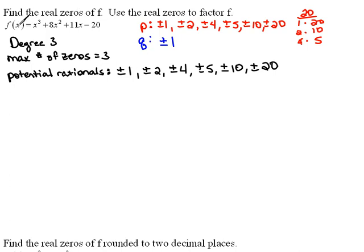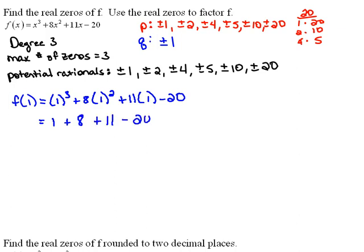then I should be able to plug 1 into the function and get a y value of 0. So that would be 1³ plus 8 times 1² plus 11 times 1 minus 20. So let's see, that would be 1 plus 8 plus 11 minus 20.